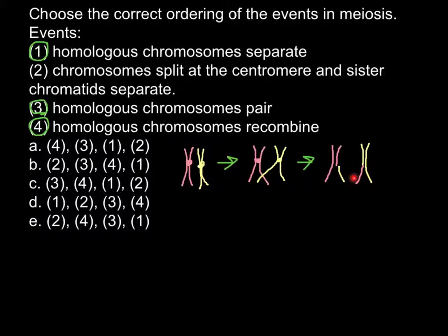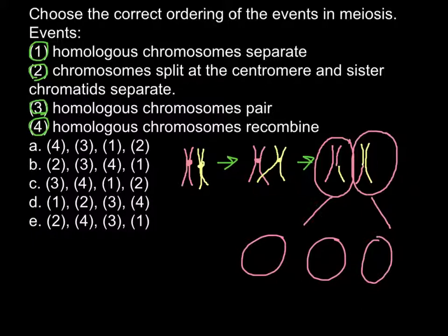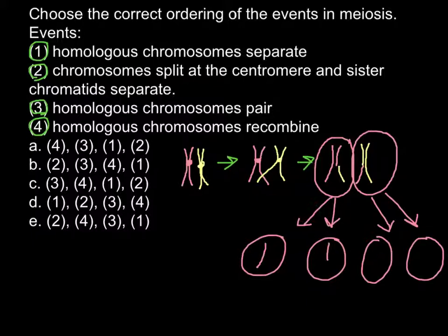The next event is number two: chromosomes split at the centromere and sister chromatids separate. At this stage we have two cells, which is the result of meiosis I. These two cells would then produce two more cells each. So one cell at the beginning of meiosis produces four cells at the end. One cell has one sister chromatid, another has a recombined sister chromatid, and the remaining two also have unique recombined chromatids.